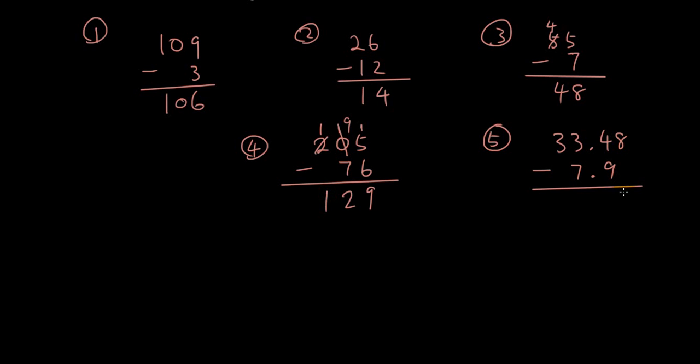Last one. 8 minus 0 is 8. 4 minus 9 not big enough, so borrow 1 from the next digit. 14 minus 9. 10 minus 9 is 1, 1 plus 4 is 5. 2 minus 7 not big enough. Borrow 1. 12 minus 7. 10 minus 7 is 3, plus 2, 3 plus 2 is 5. So now I got 25.58.